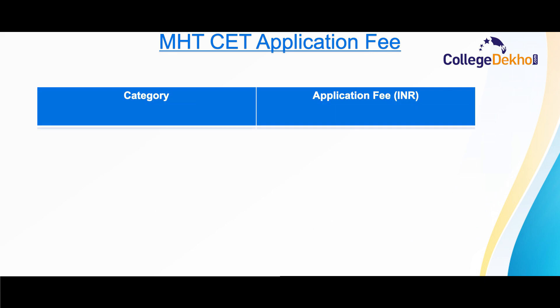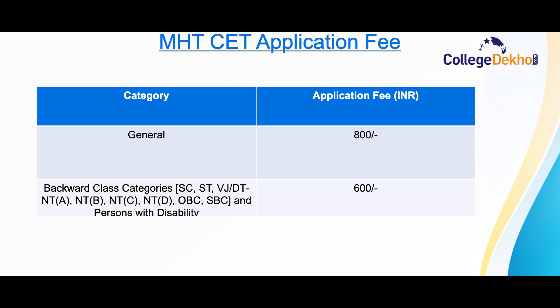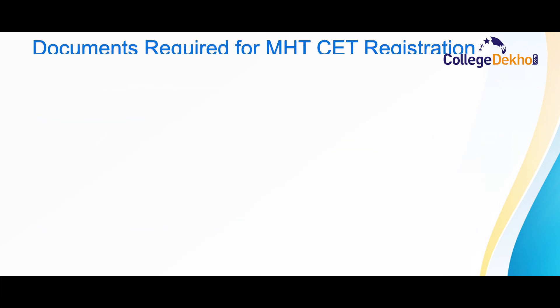The application fee for MHT CET will be different for different categories. For general category candidates, the application fee is 800 rupees, while for backward class categories such as SC, ST, OBC, SBC, disabled persons, etc., it is 600 rupees.